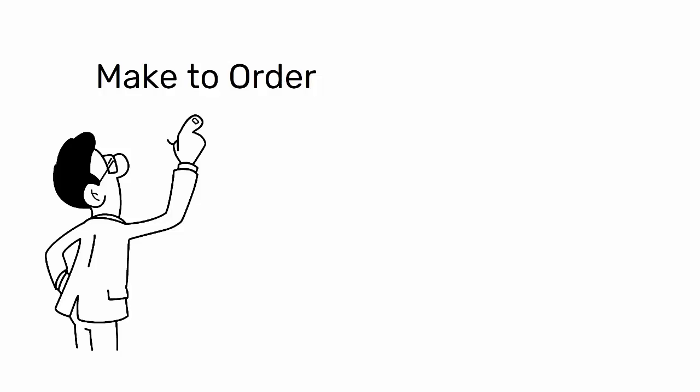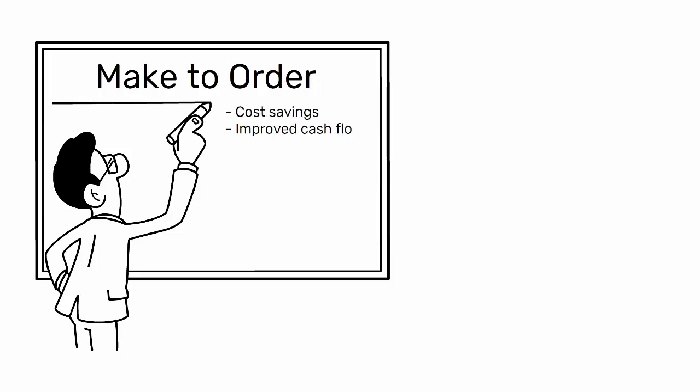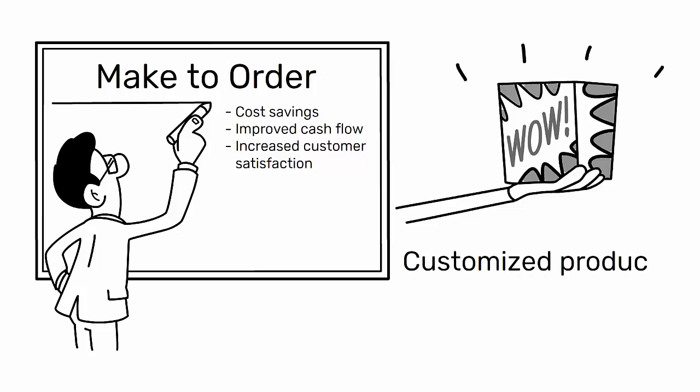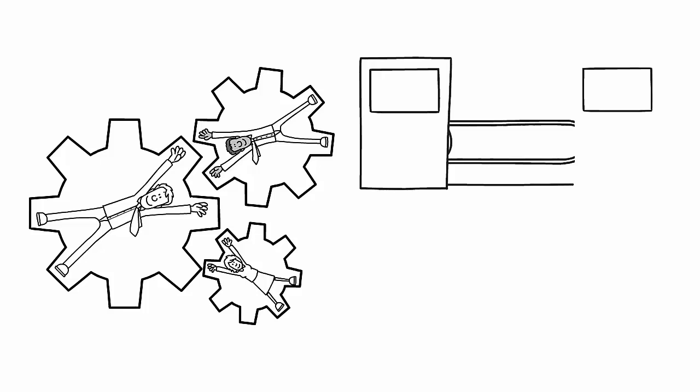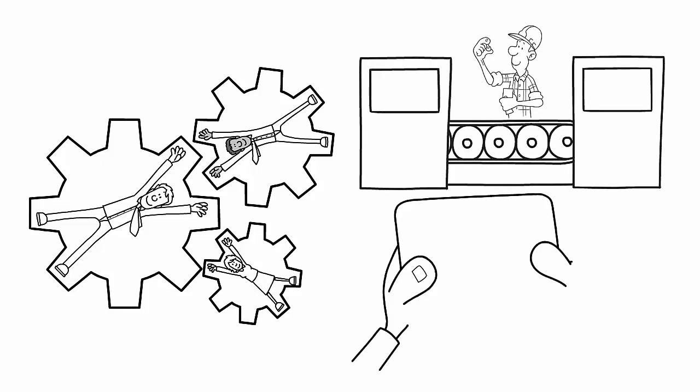In summary, make-to-order is a production strategy that can lead to cost savings, improved cash flow, and increased customer satisfaction by providing customized products. However, it requires a well-coordinated and efficient production process to be successful.